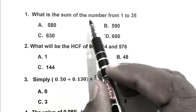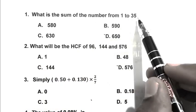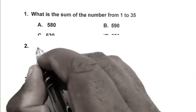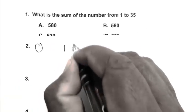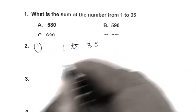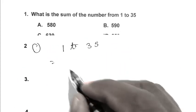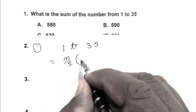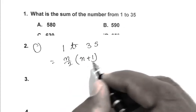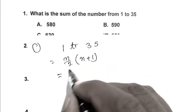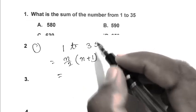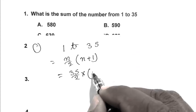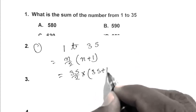Question number 1. What is the sum of the number from 1 to 35? So friend, number 1 to 35. There is a formula n upon 2 multiplied by n plus 1. So here n is 35. So we can write 35 upon 2 multiplied by 35 plus 1.